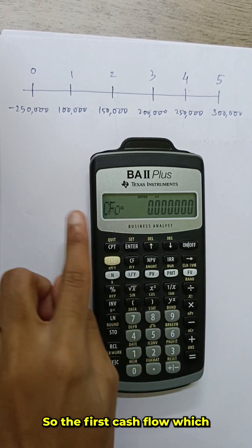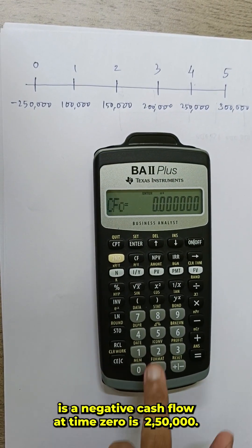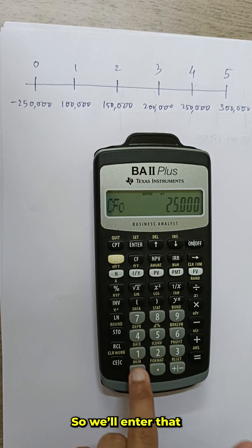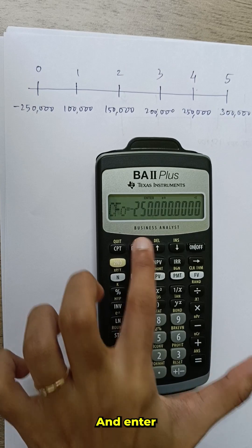CF, so the first cash flow which is a negative cash flow at time 0 is 2 lakh 50,000. So we will enter that and then we will press reset for the negative value and enter.